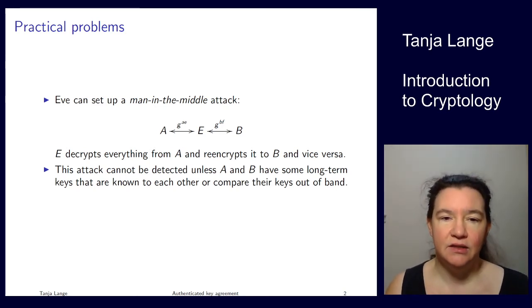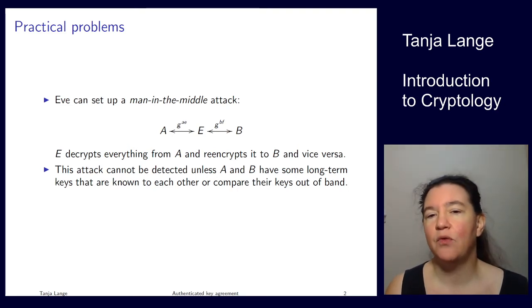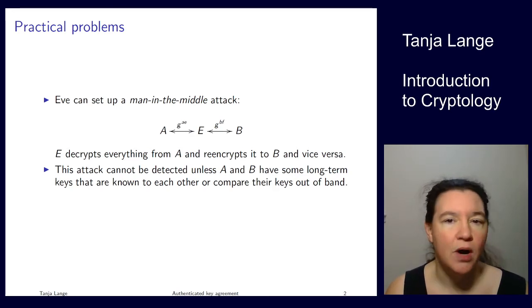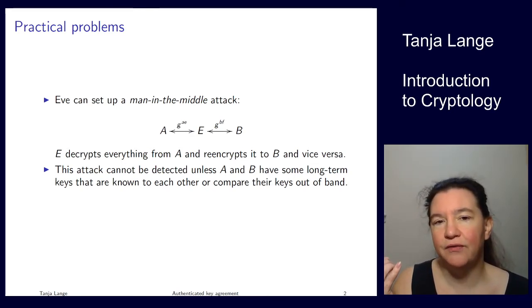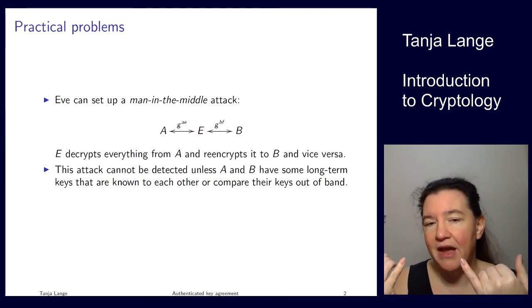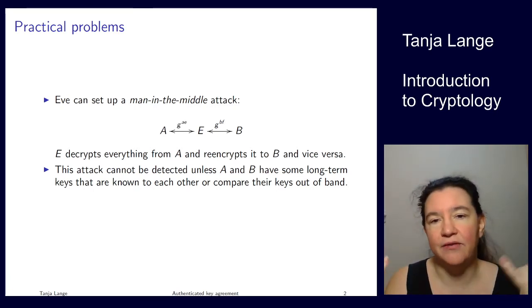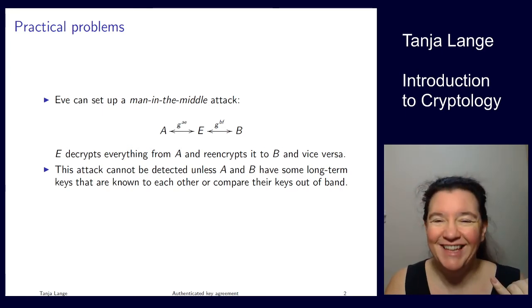And I was saying that we can't detect this unless Alice and Bob have some form of long-term key that they both know, or if they have a way to compare the keys out of band. If they can compare with a QR code or with a short hash string, they can see that the fingerprint of the key G to the AE is different from the key G to the BF, and so they know there's a man in the middle or Eve in the middle.